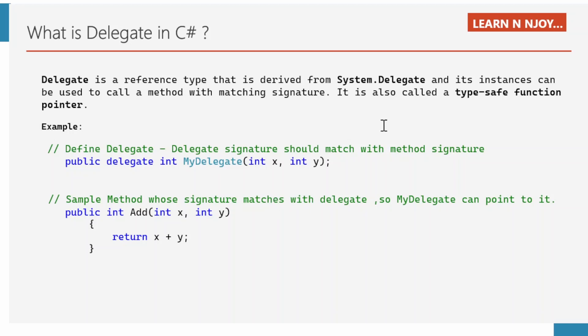That's why it is called a type-safe function pointer. Whenever we try to give a delegate reference to a method, we need to make sure that it matches with the method signature. Then only it will successfully reference it. If the delegate signature does not match with the method and you try to point the delegate to that method, it will throw a compile-time error.